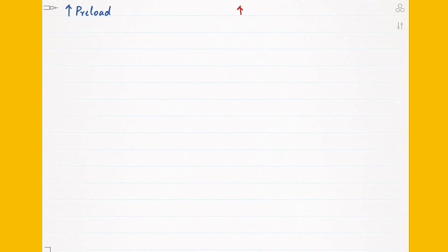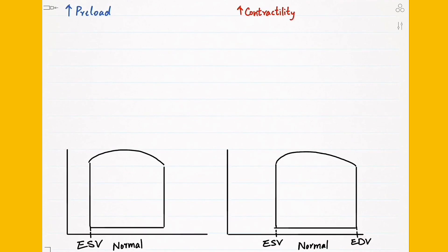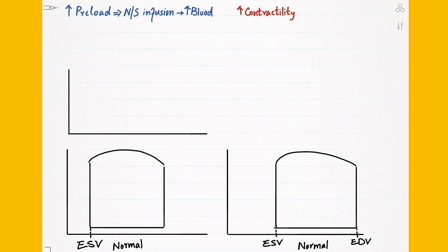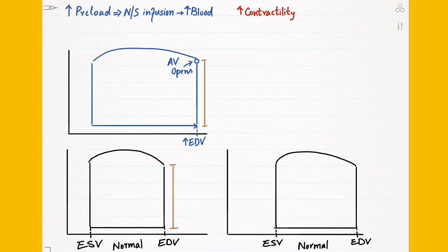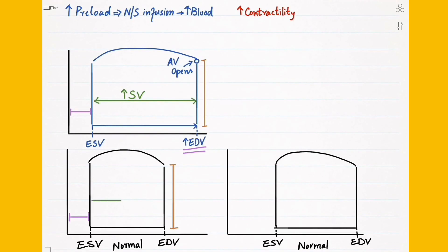What happens if we increase preload or contractility? We can increase preload by giving someone normal saline, meaning more blood in the body returns to the left ventricle and fills it up, resulting in an increased end diastolic volume. The left ventricle then contracts, opens the aortic valve generating the same pressure as in a normal loop, and pushes blood into the aorta. Notice that the end systolic volume remains the same as normal — the ventricle pumps out all the extra blood it's receiving, leaving behind a normal amount. Because the end diastolic volume has increased, we get a higher stroke volume compared to normal.